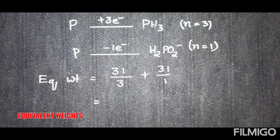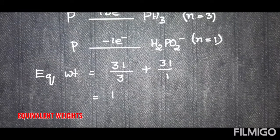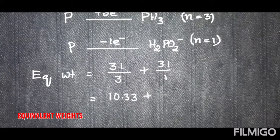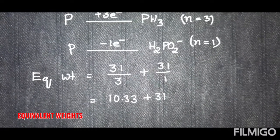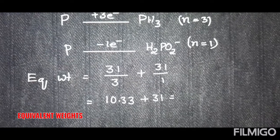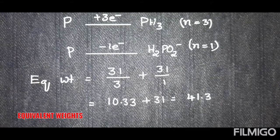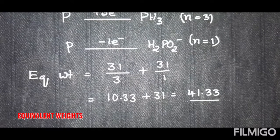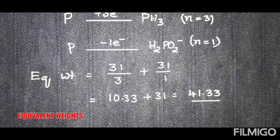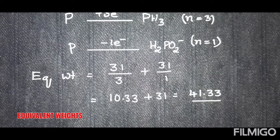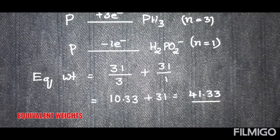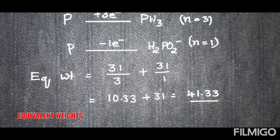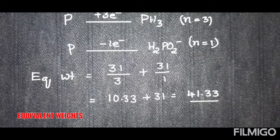When a molecule undergoes both oxidation and reduction, the equivalent weight equals the sum of the equivalent weights of each half reaction. For phosphorus, atomic weight = 31. Equivalent weight for reduction part = 31/3 ≈ 10.33; for oxidation part = 31/1 = 31. Total equivalent weight = 10.33 + 31 = 41.33. This is the method to calculate equivalent weight for a disproportionation reaction, and with this I conclude all equivalent weight concepts.